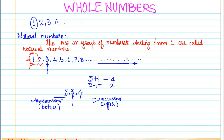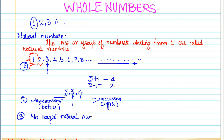This implies that it is just impossible for us to find the largest number in natural numbers. So no largest natural number exists. The reason for this is simply because we can add plus one to any number and obtain its successor.